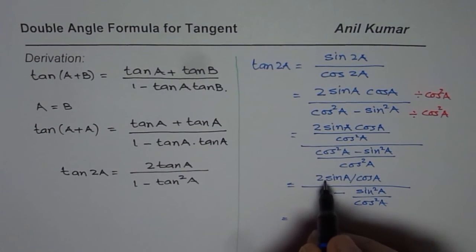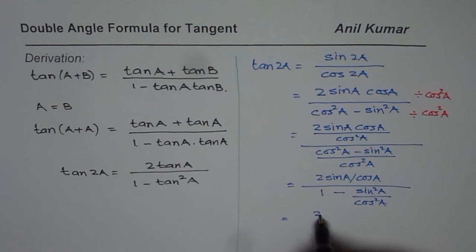Now 2sin(A) divided by cos(A) is 2tan(A), and in the denominator we get 1 - tan²(A). Indeed the same formula.